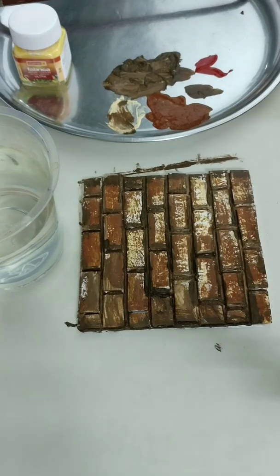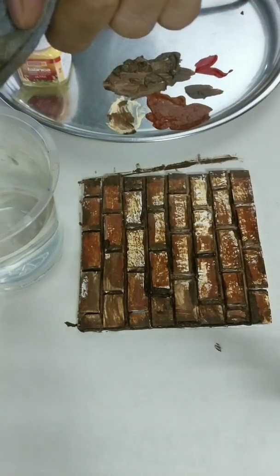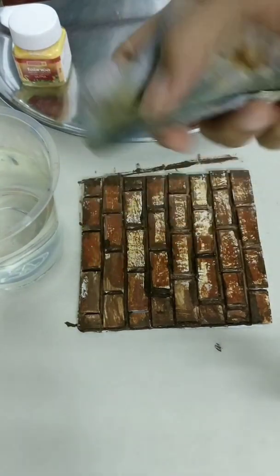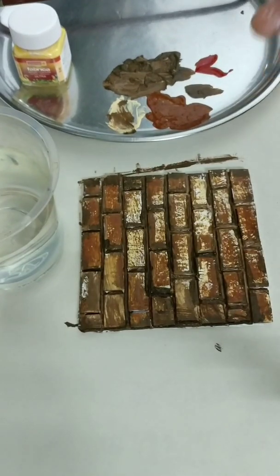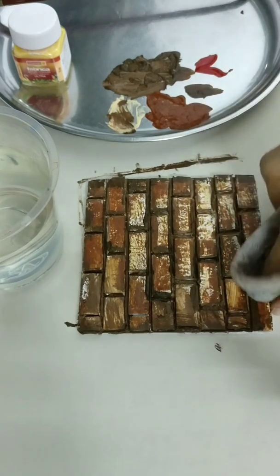If you feel that at places it has become a little dark, you can just dip your cloth or rag in water and just wipe it a little bit to lighten the colour. This we can do because we have applied gesso on it.